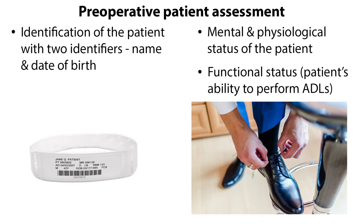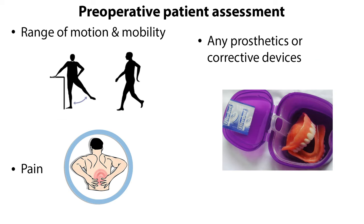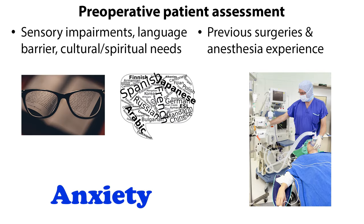Patient assessments should be individualized and include identification of the patient with two identifiers such as name and date of birth, mental and physiological status of the patient, functional status of the patient's ability to perform ADLs or activities of daily living, cardiovascular and respiratory status, skin condition, nutritional status, how long has the patient been NPO, range of motion and mobility, and pain.